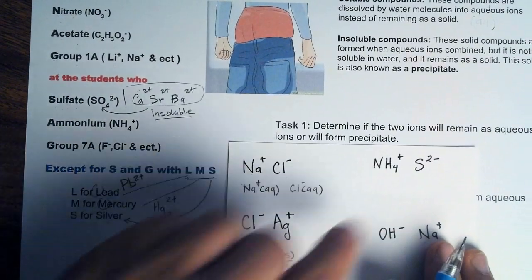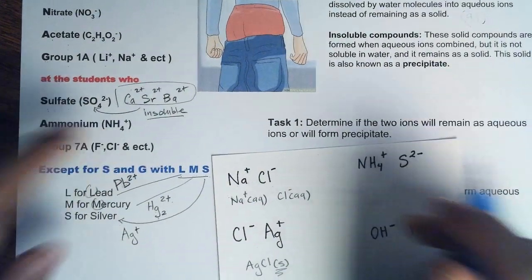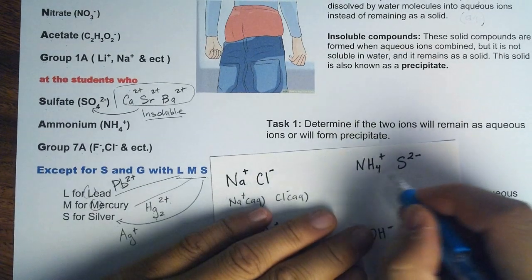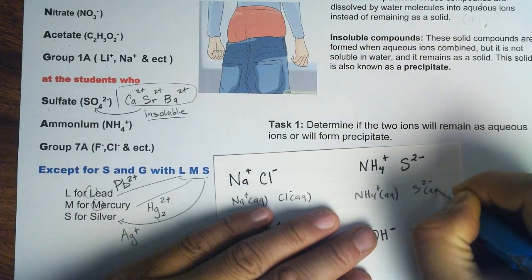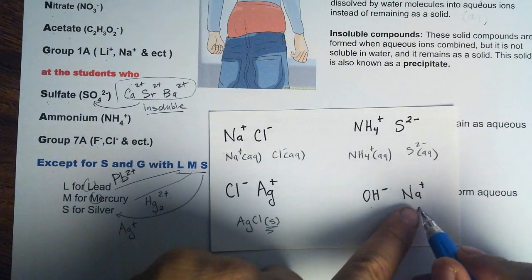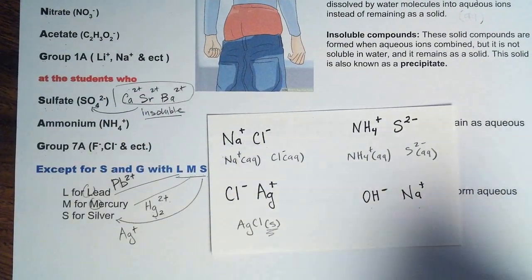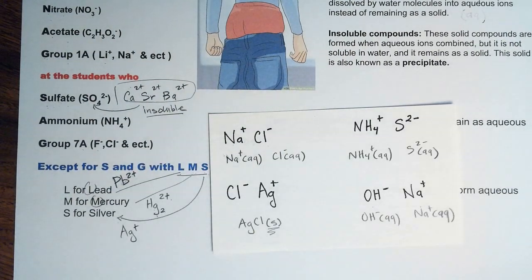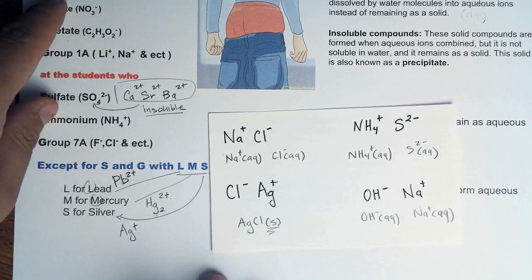Then we have ammonium sulfide. Ammonium has no exception, so anything bonded with ammonium is always soluble — we know right away it is going to remain as aqueous ions. And then we have hydroxide and sodium — anything in Group 1A will be soluble, so of course we know it is going to be aqueous ions. And that is how we determine if two solutions of different ions, when mixed together, will form a precipitate based on solubility rules.